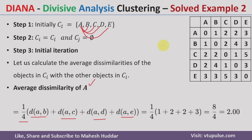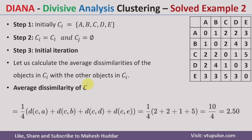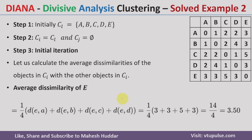The distance from A to B is equal to 1, and from A to C is equal to 2. Once I put in all the values and simplify, I get 2 as the average dissimilarity of A. Now we calculate the average dissimilarity of B — that is distance from B to A, B to C, B to D, and B to E divided by 4 — which gives 2.5. Similarly, the average dissimilarity of C is 2.5, D is 2.5, and E is 3.5.